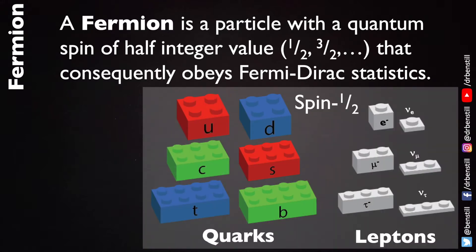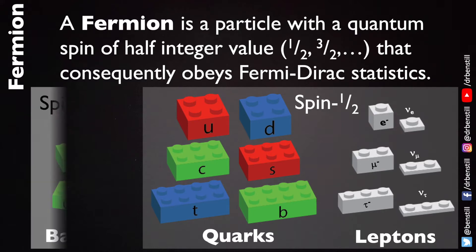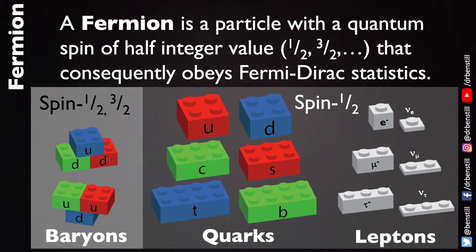The fundamental particles of quarks and leptons have a spin of a half, while composite particles that are made from quarks, like baryons, can have a spin of a half or have an excited state with a spin of three over two.